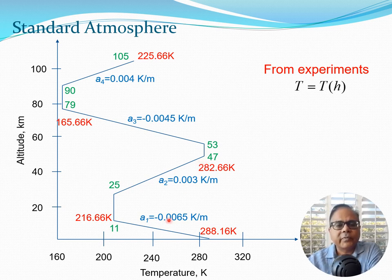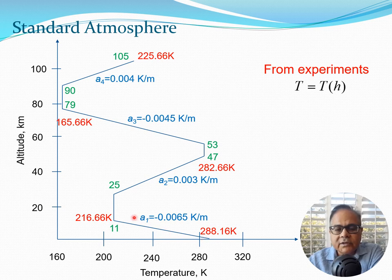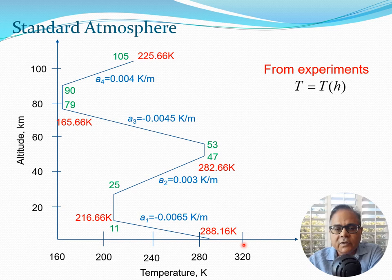The region where the temperature is changing in a straight line form is known as the gradient region. The parameters a1, a2, a3, a4 give you the slopes of these lines in the gradient region. As you can see, this slope here is negative, this slope here is positive, again negative, and again positive. A line like this has positive slope, as you remember from calculus.